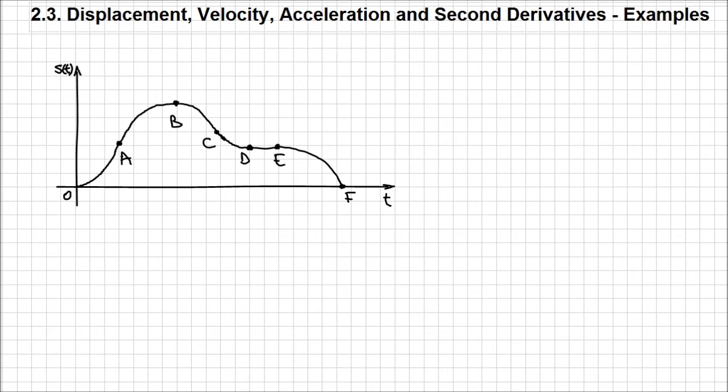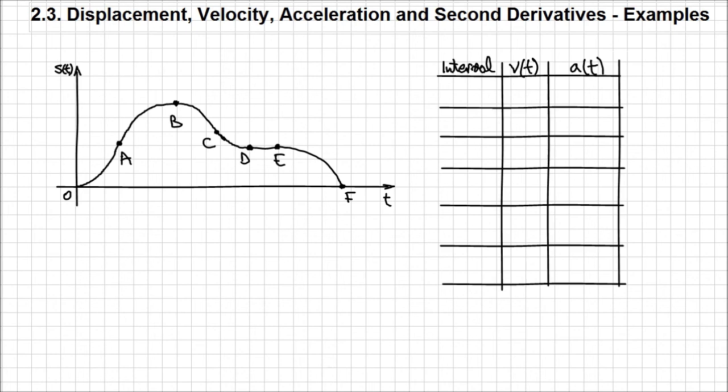Let's not waste any more time. Since we have to analyze all these separate intervals, let's create a table. The first column will be for the intervals: 0 to A, A to B, B to C, C to D, D to E, and E to F. The second column will be for velocity and the next for acceleration.